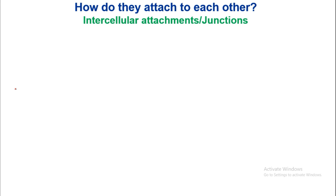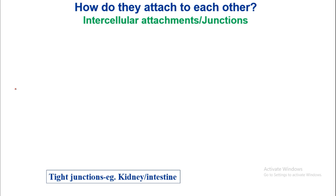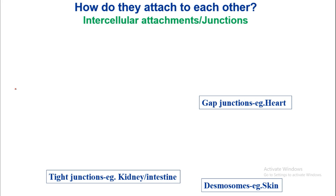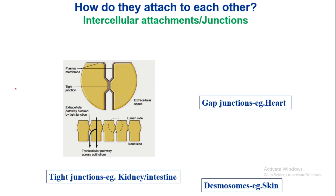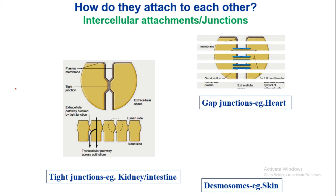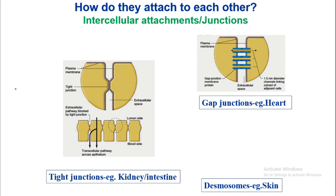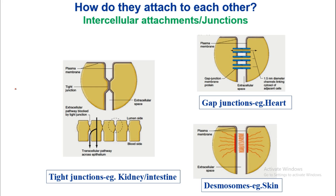How do cells attach to each other? There are three types of junctions: tight junctions, gap junctions, and desmosomes. Tight junctions are present in cells of the kidney and intestine. Gap junctions are present in cells of the heart. Desmosomes are present in cells of the skin.